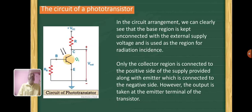In the circuit arrangement, we can clearly see that the base region is kept unconnected with an external supply voltage and is used as the region for radiation incidence. Only the collector region is connected to the positive side of the supply along with the emitter, which is connected to the negative side. However, the output is taken at the emitter terminal of the transistor.